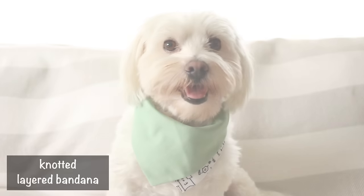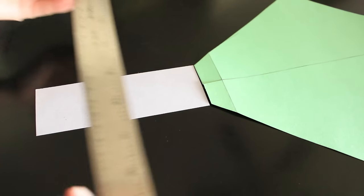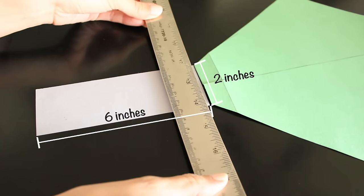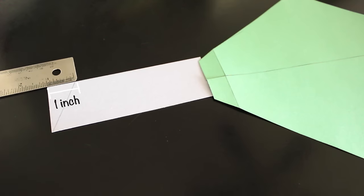For the non-collar version, I took the same template and added 6 inches to the sides. Then I cut the ends at a 1 inch angle.